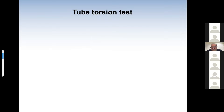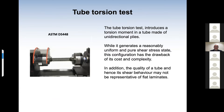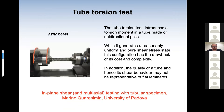The fifth commonly used test is the tube torsion test. It introduces a torsion moment in a tube made of unidirectional plies. While it generates a reasonably uniform and pure shear stress state, this configuration has the drawback of its cost, complexity, and representativity — because the quality of a tube and hence its shear behavior may not be representative of the behavior of a flat laminate. Marino Quaresimin from the University of Padua will illustrate the difficulties in testing tubular specimens.